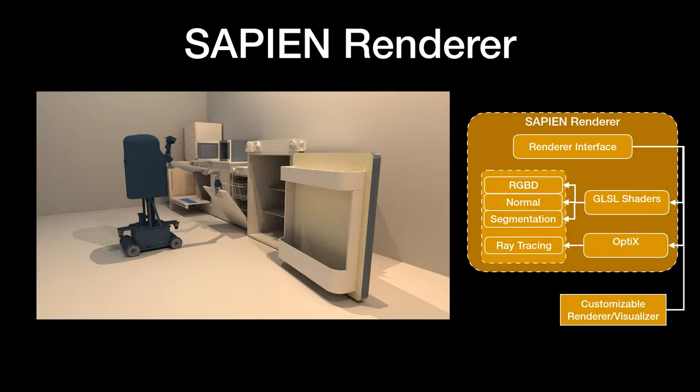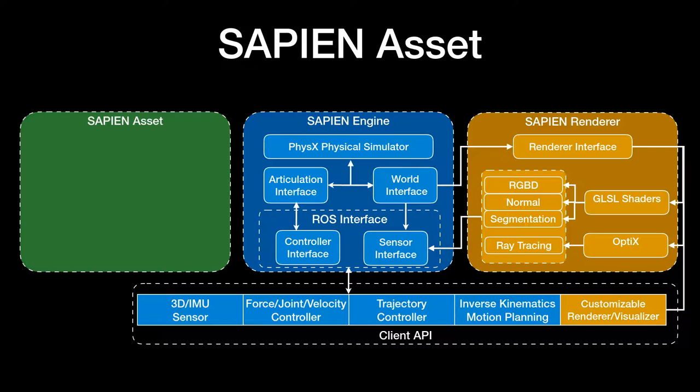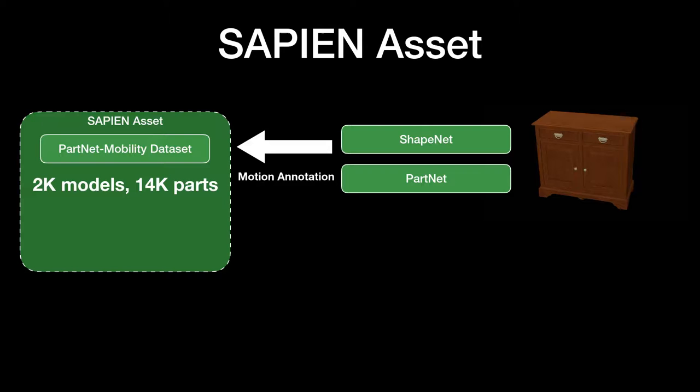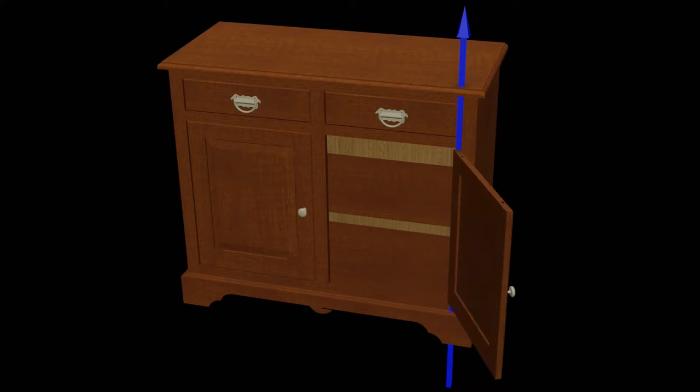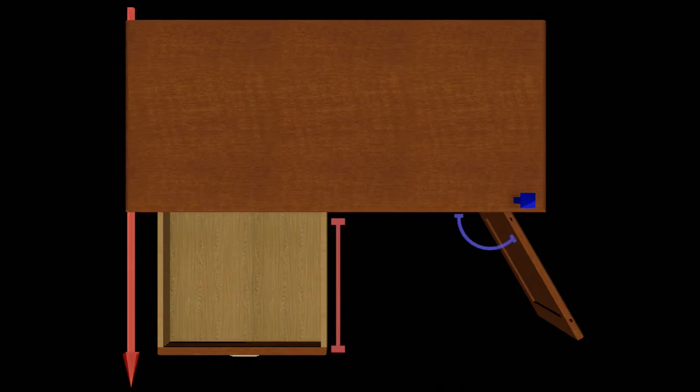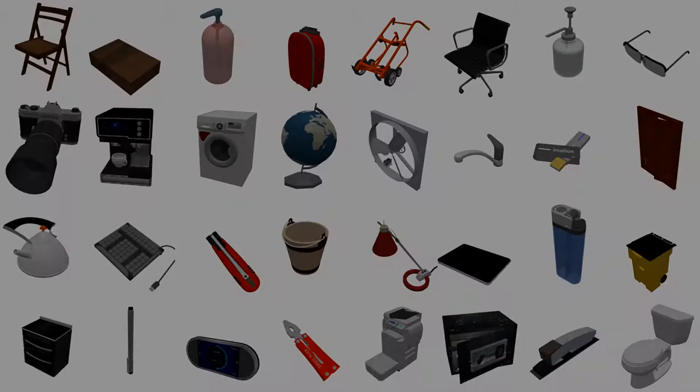Now let's see what simulation content Sapien has to offer. The most significant contribution we made is the PartNet Mobility dataset, which is the further annotation of the ShapeNet and PartNet datasets to include more than 2,000 models and 14,000 movable parts. For each model, we annotate the rotational axis and translational axis for each movable part, and for each motion we annotate the motion range. Our annotation includes complex kinematic chains, such as the relation between the door handle and the door shaft here. And here is a demonstration of some objects in the PartNet Mobility dataset.